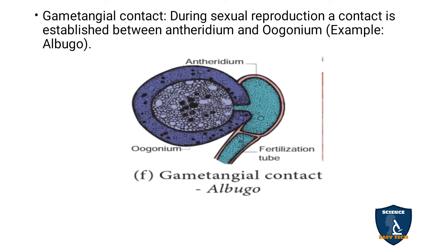Gametangial contact: during sexual reproduction, a contact is established between antheridium and oogonium. Example: Albugo. The oogonium and antheridium come in contact, a zygote forms, and that type of fusion is called gametangial contact.